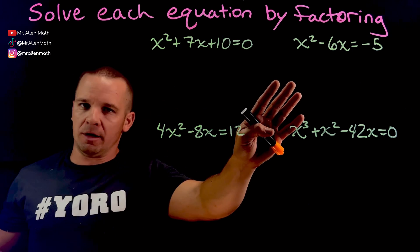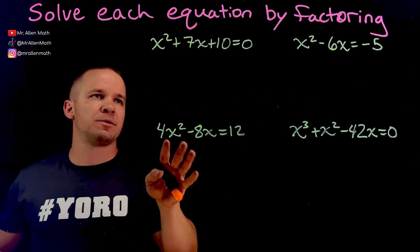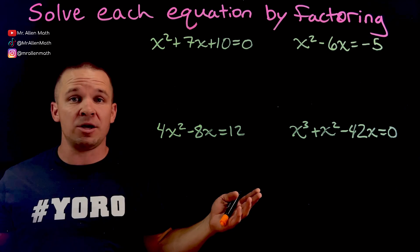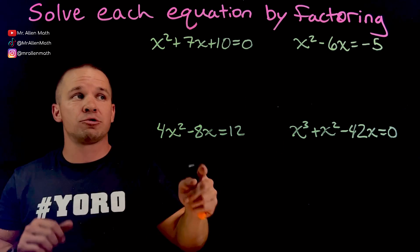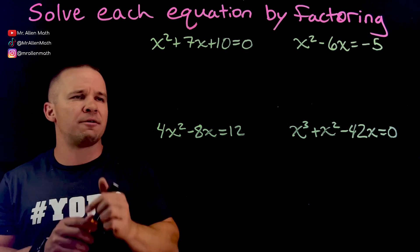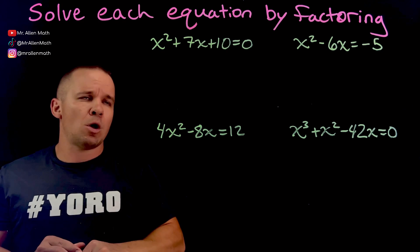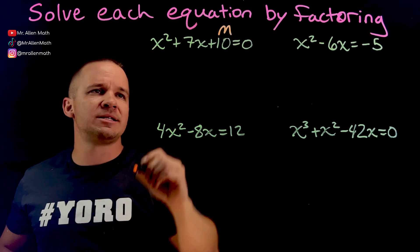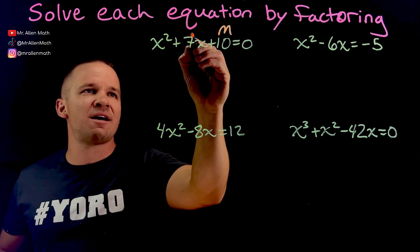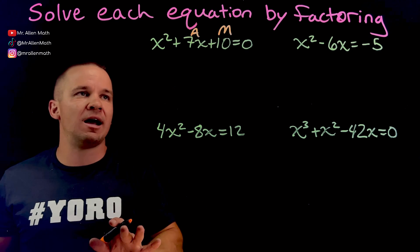Let's start with example 1 here. X squared plus 7X plus 10 equals 0. Step 1, you've got to be equal to 0. We're good to go. No extra step. That guy right there might have to do some stuff. So next thing, what multiplies to my constant here, what multiplies to that 10 and adds to 7 at the same time?